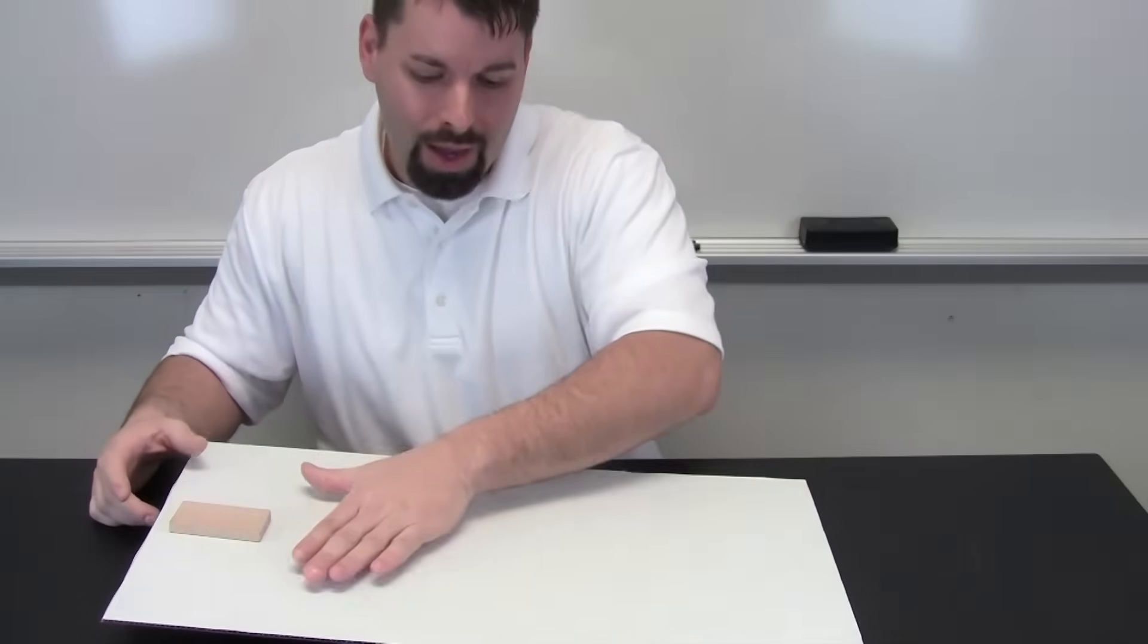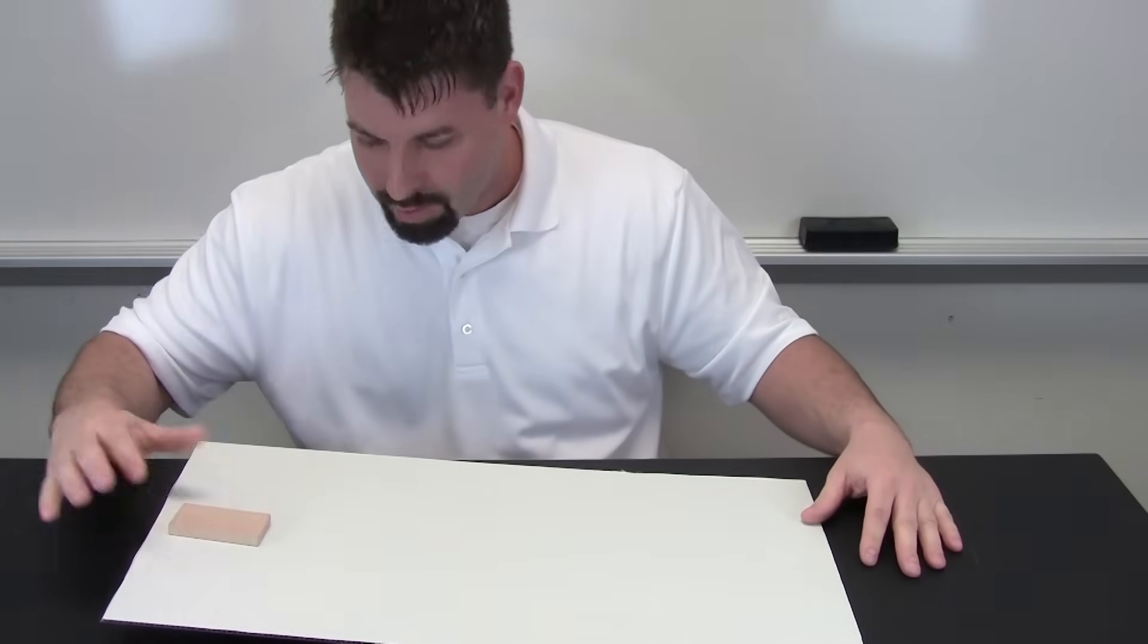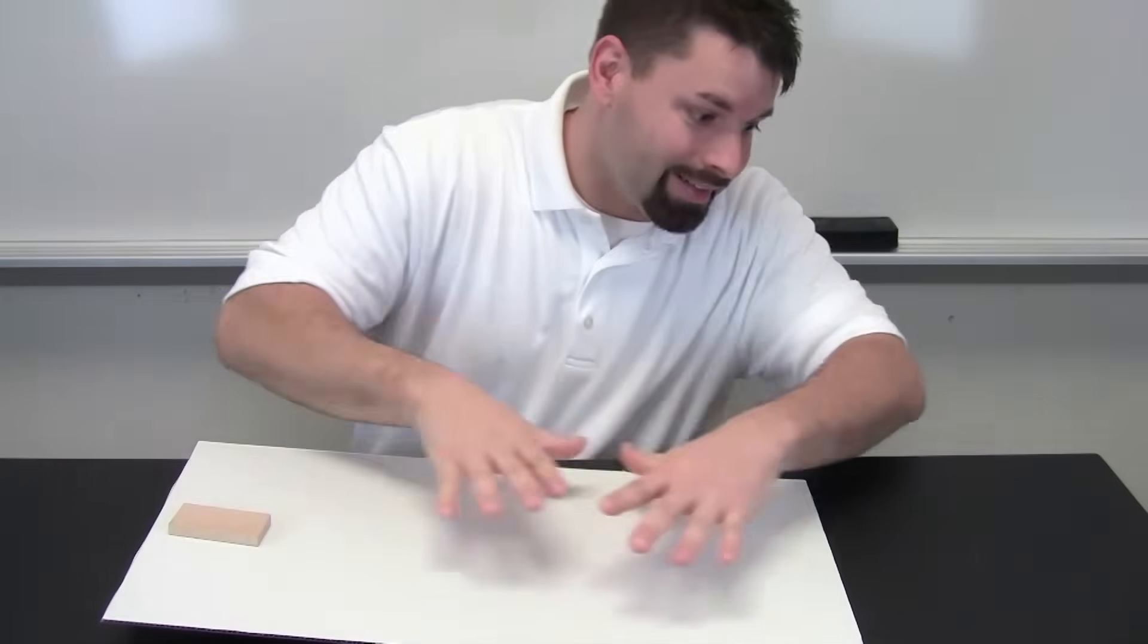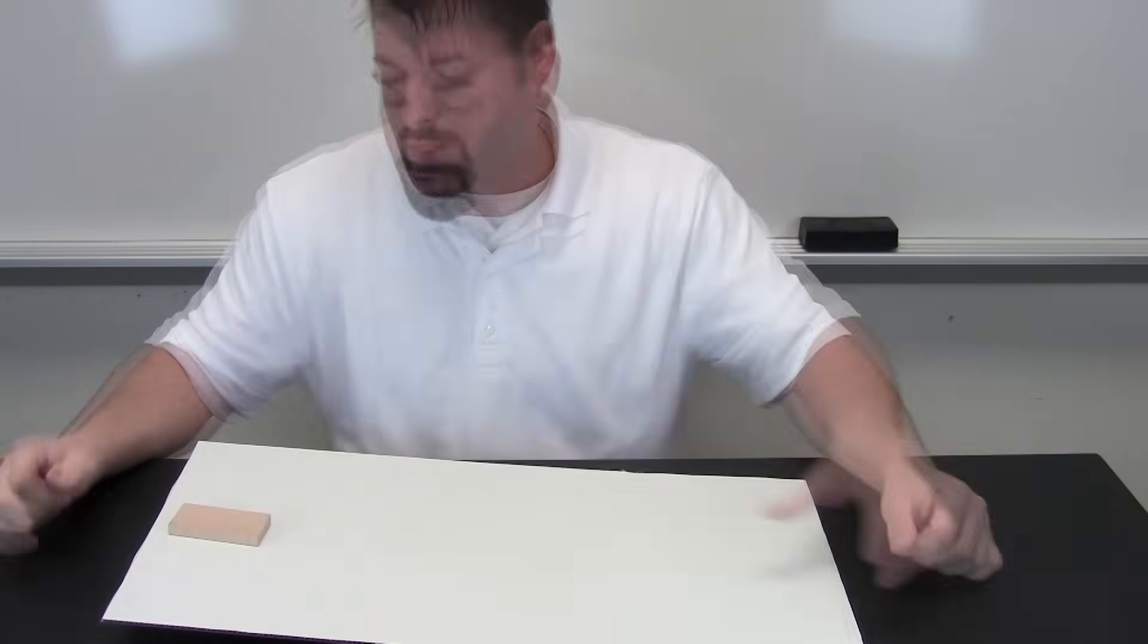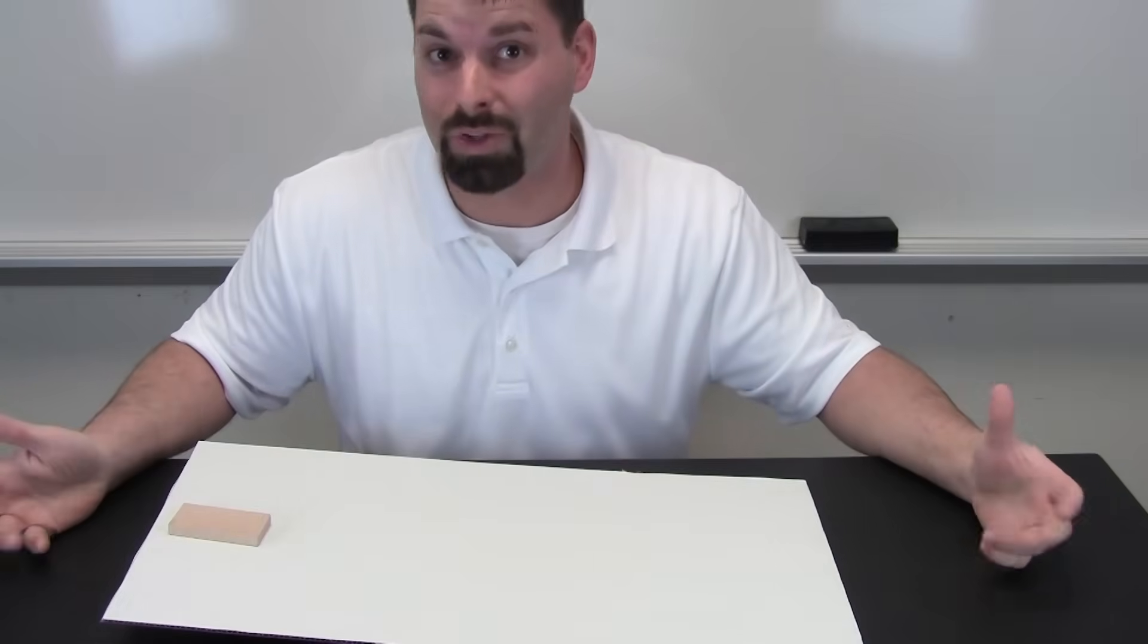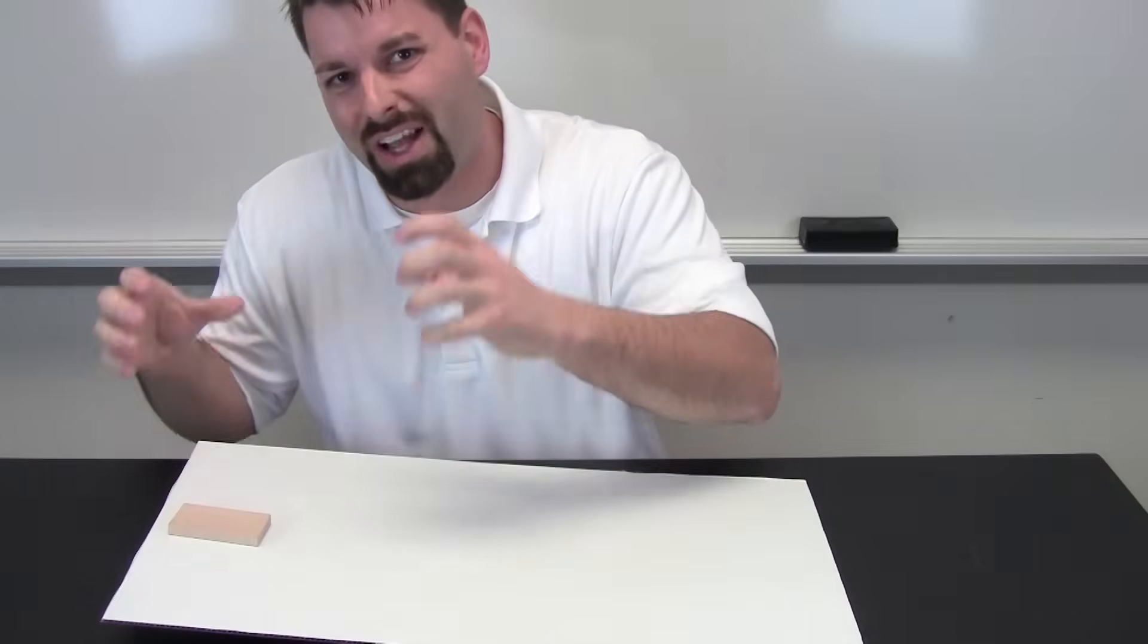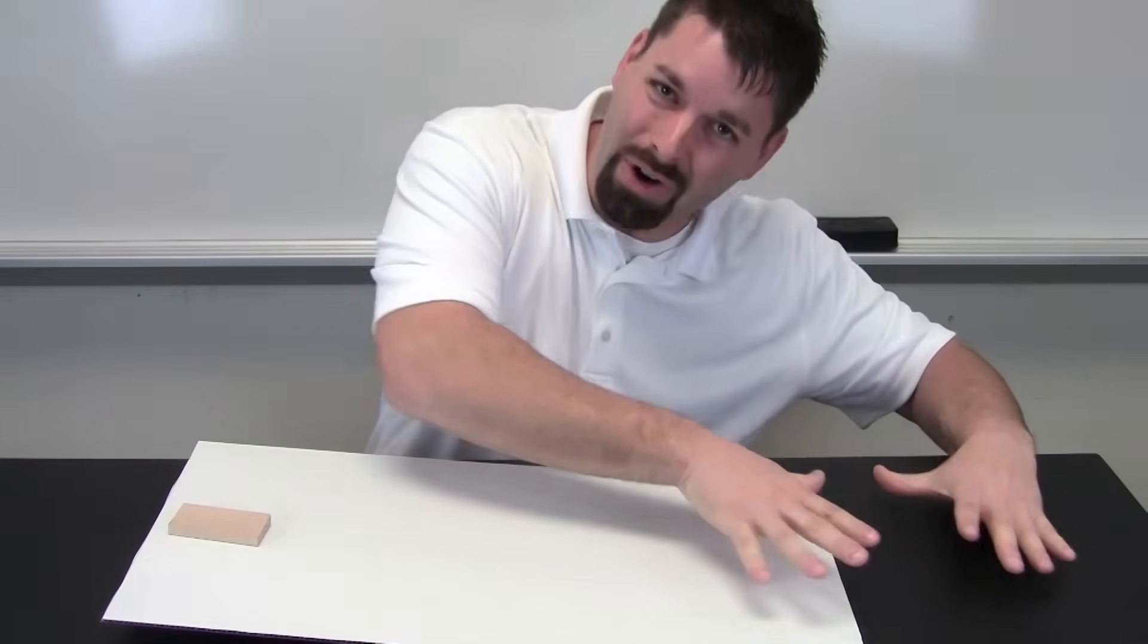So I have a really simple setup. I have a cardboard ramp and a plain wooden block. Why is the block not sliding down the ramp? The force of gravity wants to pull that block down the ramp. What is keeping it still? The force of friction. The force of friction is actually stronger than the force of gravity.